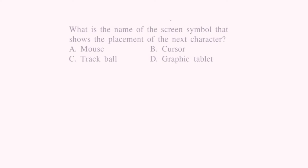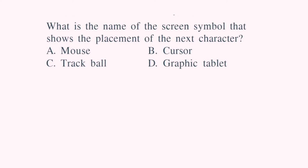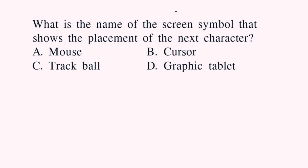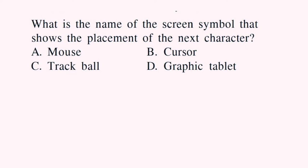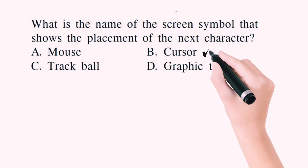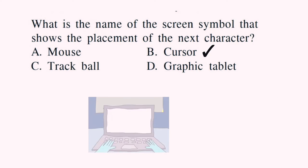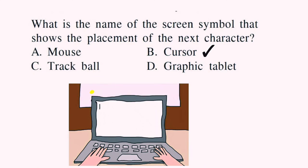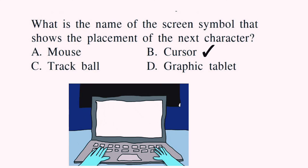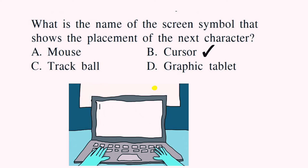What is the name of the screen symbol that shows the placement of the next character? When we type something on a computer or keyboard, there is a blinking point — that blinking line is called the cursor. The right answer will be cursor.